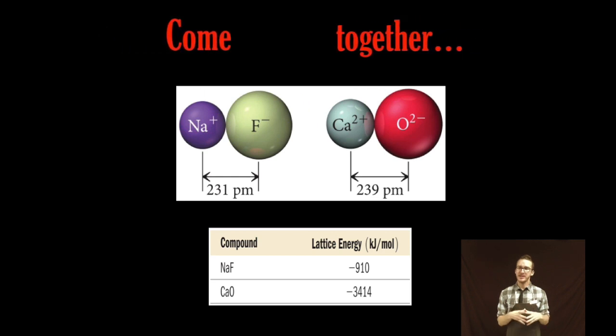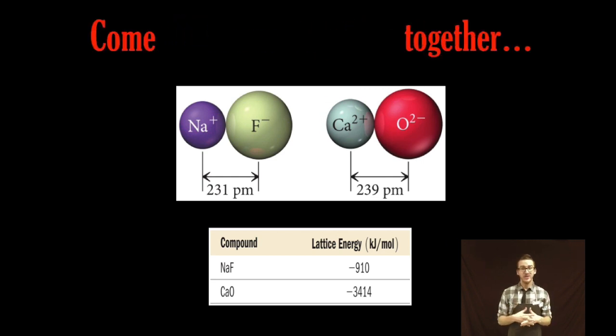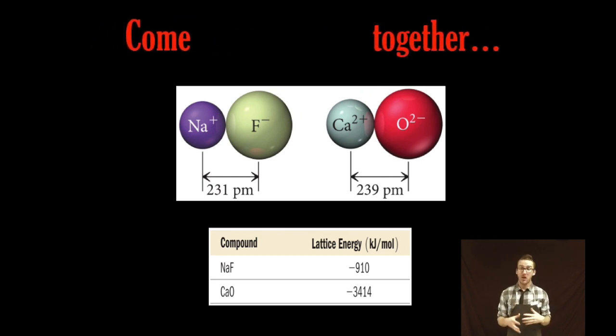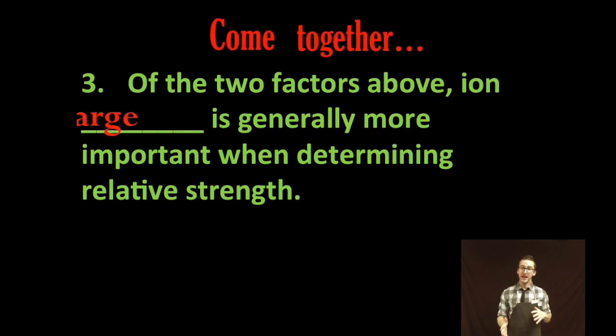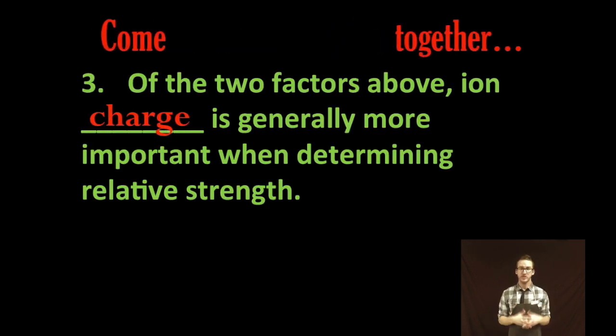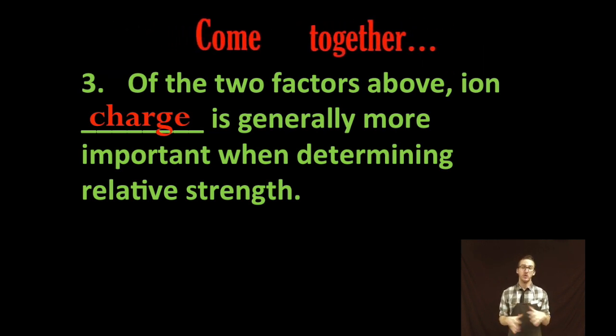This time recognize the distance between the ions in these two compounds is approximately the same. However notice the lattice energy is far greater in the compound that forms between calcium and oxide and it comes back to the larger charges in calcium and oxide than we see in sodium and fluoride. Coulomb's law and important to note of the two factors charge and distance it's usually ion charge that's generally more important when determining relative strength of an ionic bond.